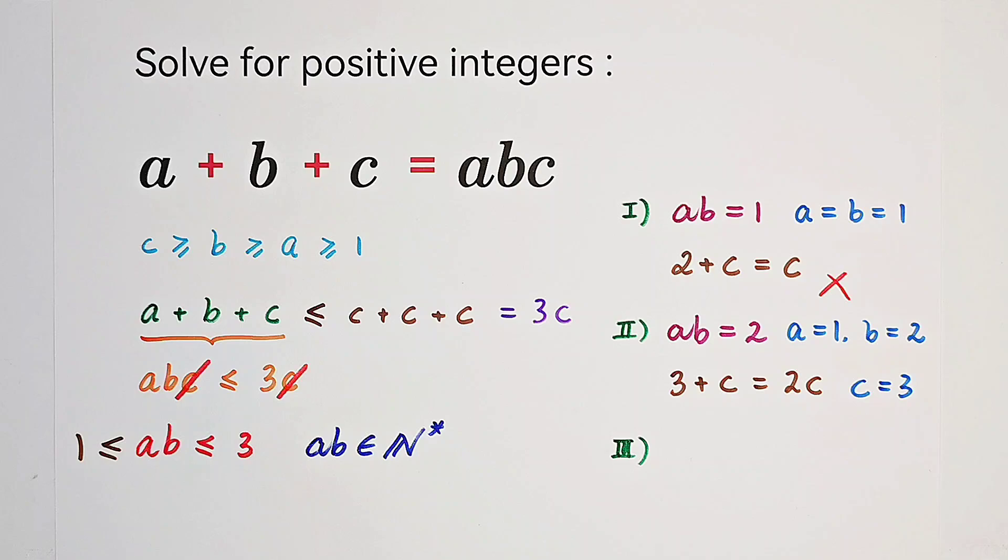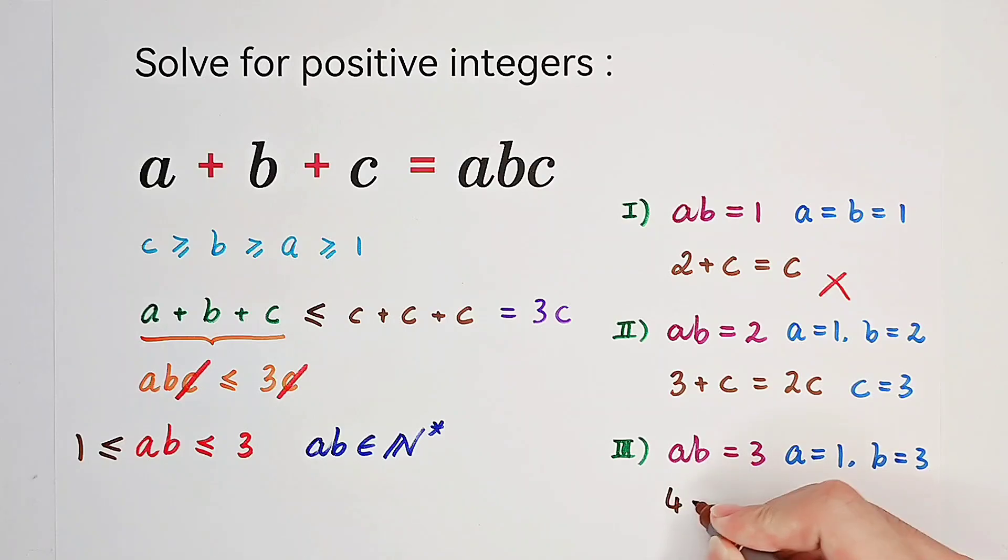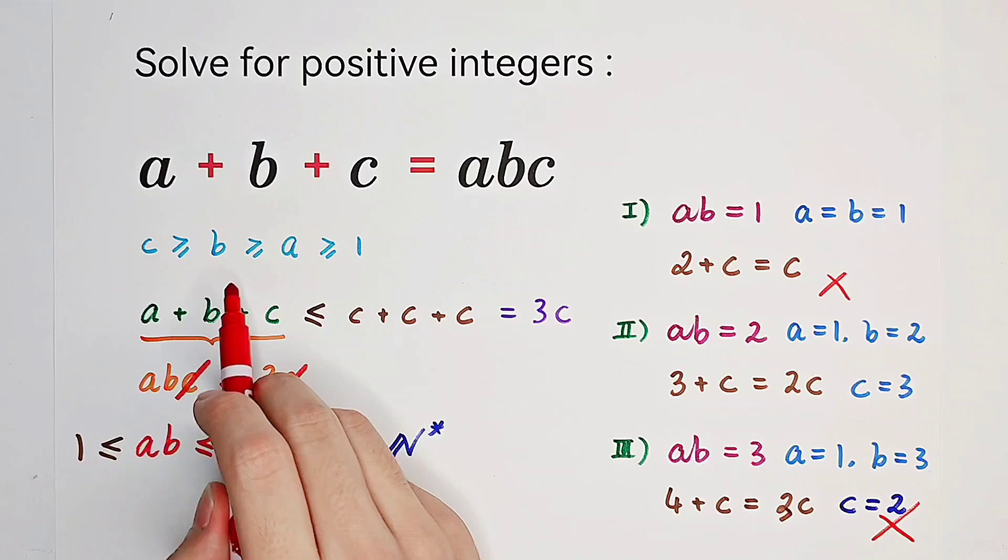In our third case, A times B is 3. Because 3 is also a prime number, we get A is 1, B is 3, because B is always greater than or equal to A. Substitute the values into our original equation. We get 4 plus C equals 3C. However, this is wrong because in this case, B is greater than C.